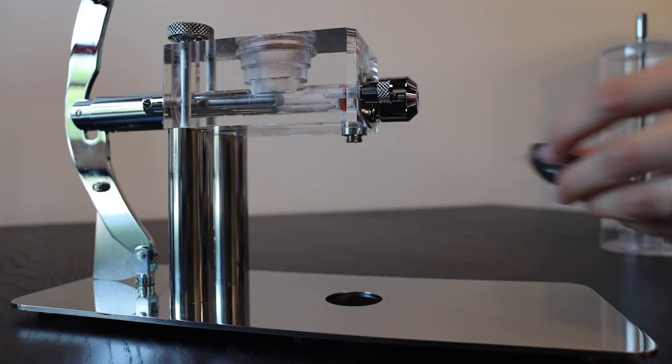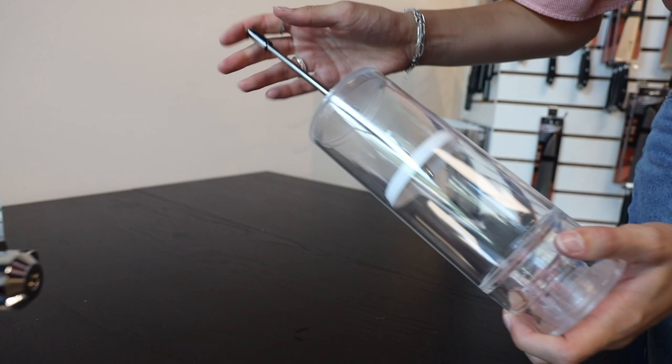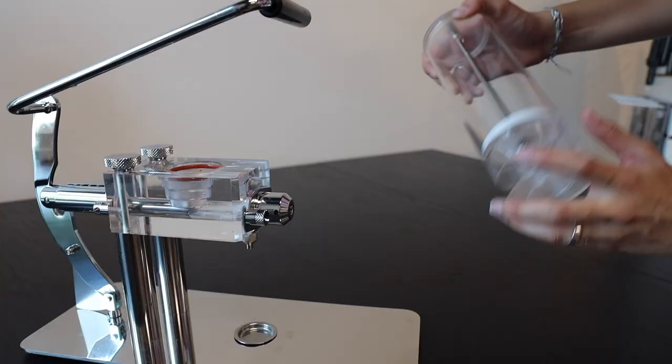For storing the tube, you have two options. Either you can put the bottom lid back on and store as is, or you can store it directly back on the dispenser. It's really your preference.